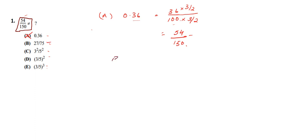Now let us check option B, which is 27 by 75. To convert 75 into 150, we simply multiply by 2. So 27 multiplied by 2 gives us 54, and 75 multiplied by 2 gives us 150. So this also matches with the question. Hence option B is not the correct answer. Now let us check option C.